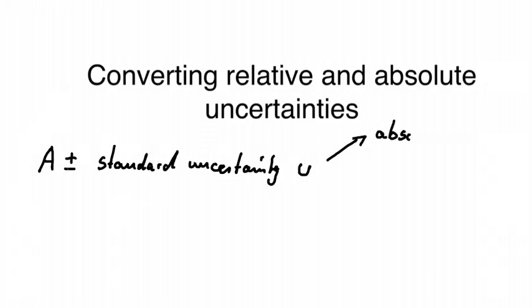Let's assume we have a measurement A plus minus a standard uncertainty U. We know that we can have two different forms of U. It can be either an absolute uncertainty or it can be a relative uncertainty.